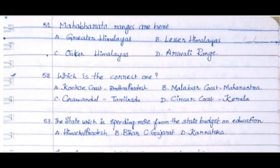Question 52: Which is the correct one? Option A. Konkan Coast, Andhra Pradesh, Option B. Malabar Coast, Maharashtra, Option C. Coromandel, Tamil Nadu, Option D. Sarkar Coast, Kerala. The answer is Option C. Coromandel, Tamil Nadu.